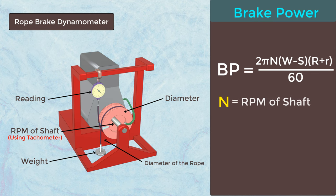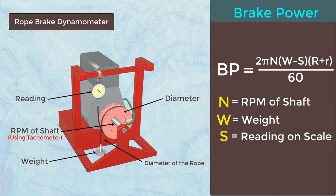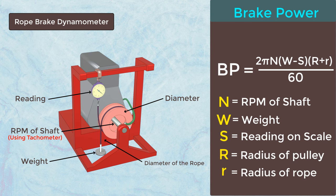Here, N is the revolution of the shaft in a loaded condition. W is the weight hanging on the rope. S is the reading shown on the weighing scale. R is the radius of the pulley, and small r is the radius of the rope.